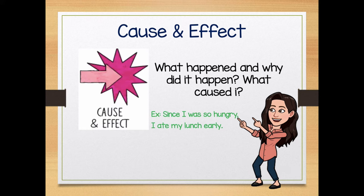The next type of text structure we're going to talk about is cause and effect. Cause and effect is what happened and why did it happen — what caused something or a major event to happen. For example: 'Since I was so hungry, I ate my lunch early.' The effect was I ate my lunch early, but what caused me to eat my lunch early? I was so hungry. So one thing has to happen before another — me being hungry caused me to eat my lunch early.